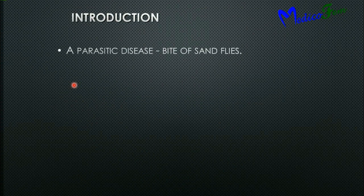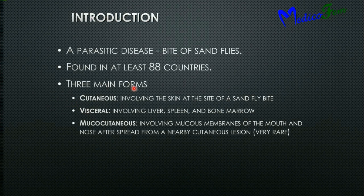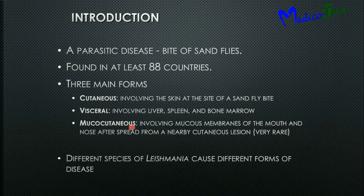It is a parasitic disease caused by the bite of a sandfly. It is found in at least 88 countries of the world. There are mainly three forms of leishmaniasis: cutaneous, which involves the skin at the site of sandfly bite; visceral, which involves the viscera like liver, spleen, and bone marrow; and the rare mucocutaneous form, which involves the mucous membrane of the mouth and surrounding area.